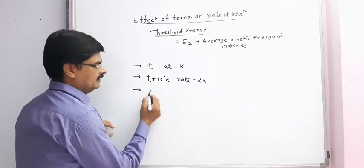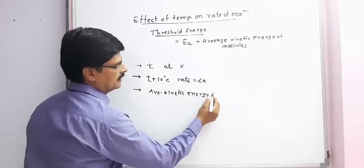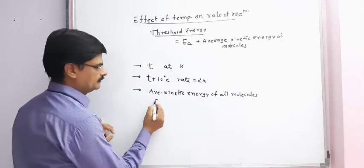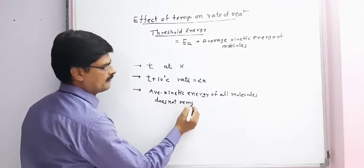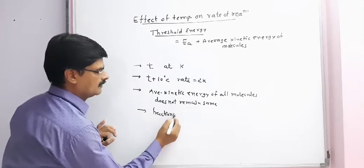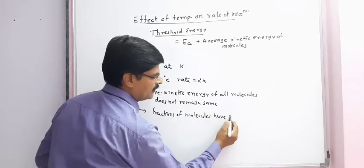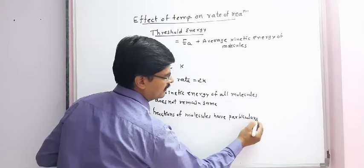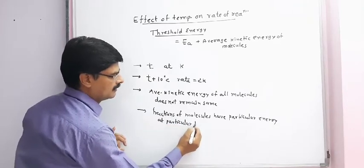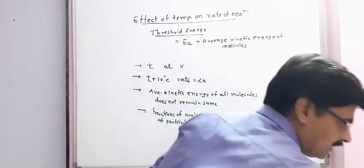At a particular temperature, the average kinetic energy of all molecules does not remain the same. But molecules have particular kinetic energy at a particular temperature. So if we draw the graph of fraction of molecules versus kinetic energy, the graph will appear in this way.